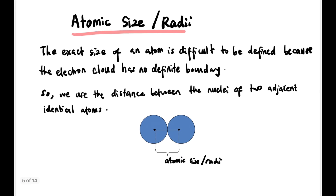Atomic size or radius — the exact size of an atom is difficult to define because the electron cloud has no definite boundary. So we use the nucleus between two adjacent similar atoms, looking at the midpoint. That midpoint is what we call the atomic radii, or the size of the atom.